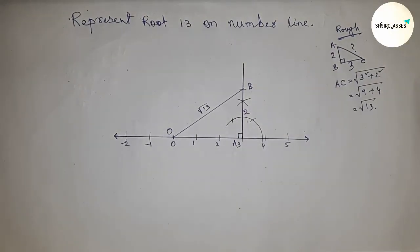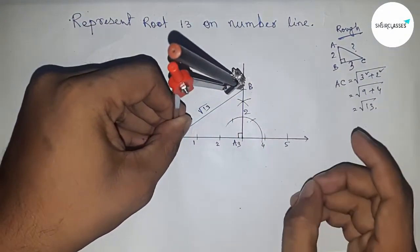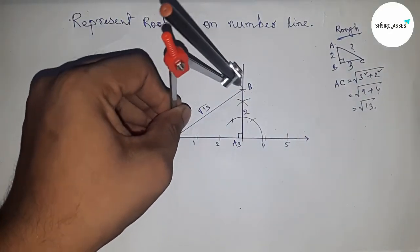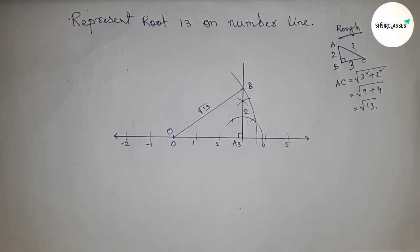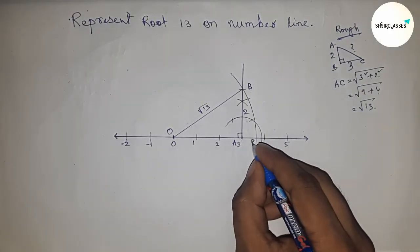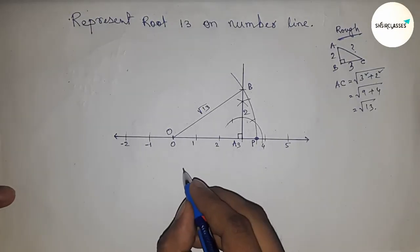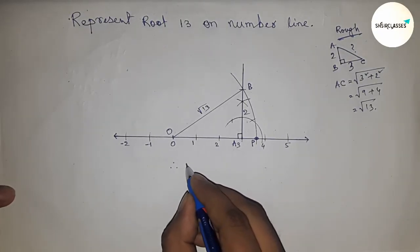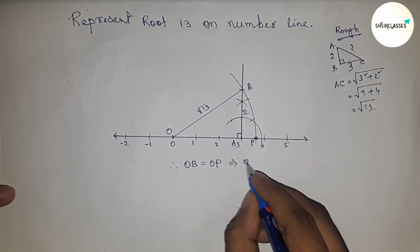Next, take the length OB with the compass and draw an arc which cuts the number line at point P. This is the representation of root 13. Therefore, OB equals OP, and OB equals root 13, which implies OP equals root 13.